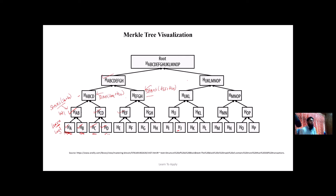We combine the pairs at each subsequent level until finally we have the top level. Combining the last two hashes gives us the Merkle root — H of ABCDEFG...P — which is basically a representation of every transaction that was present. That's why we say Merkle roots help us summarize all data inside the block. This Merkle root is what you see in the Bitcoin block header.